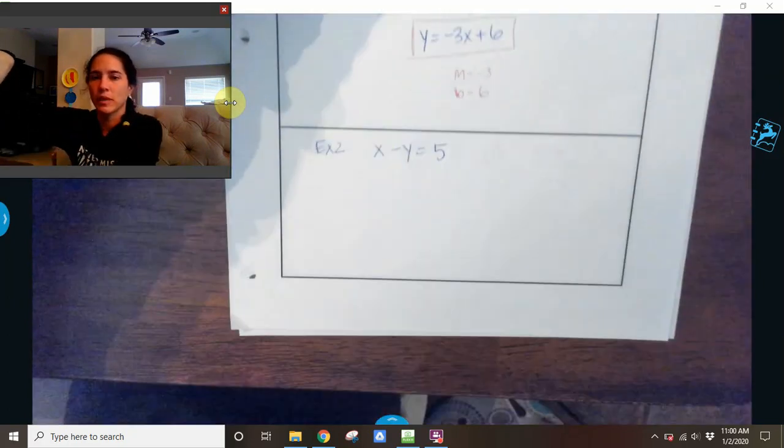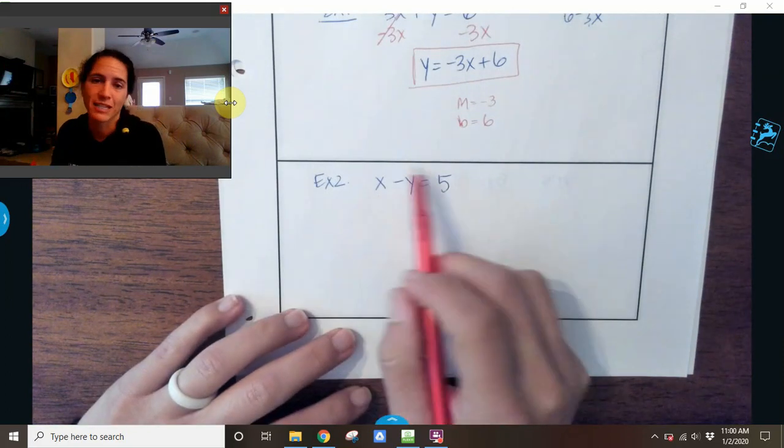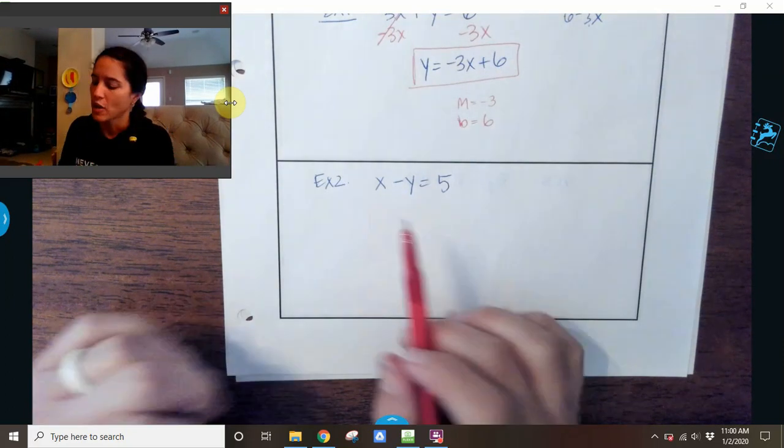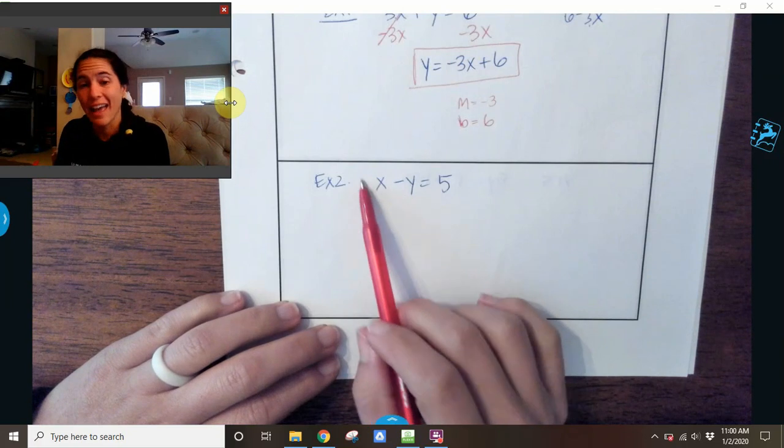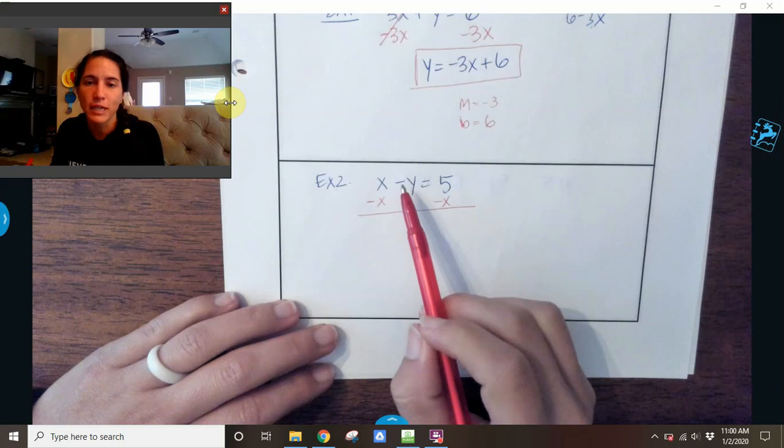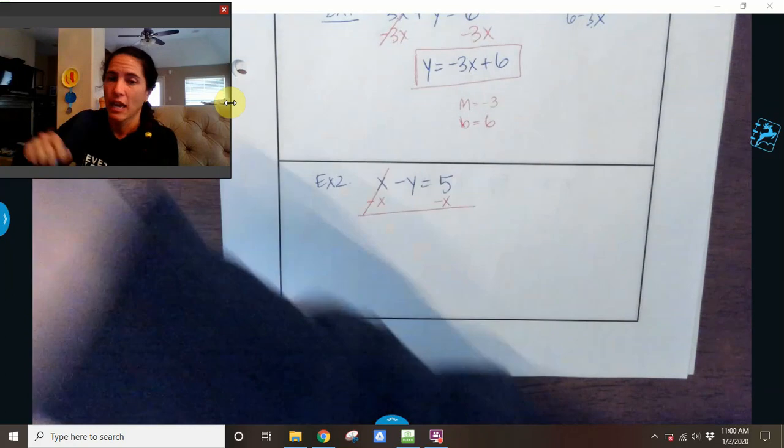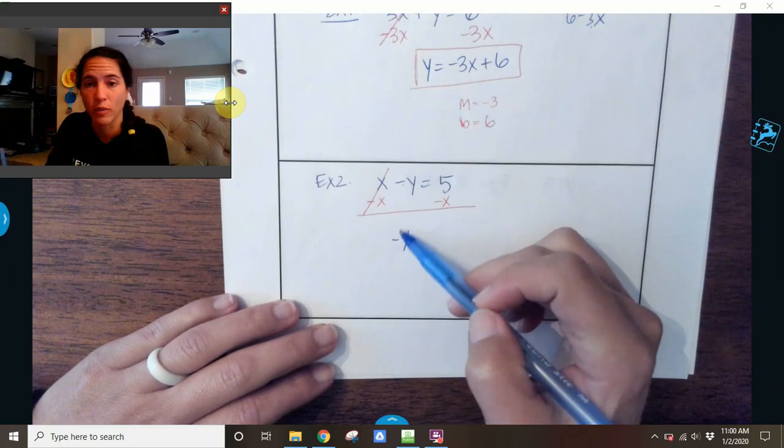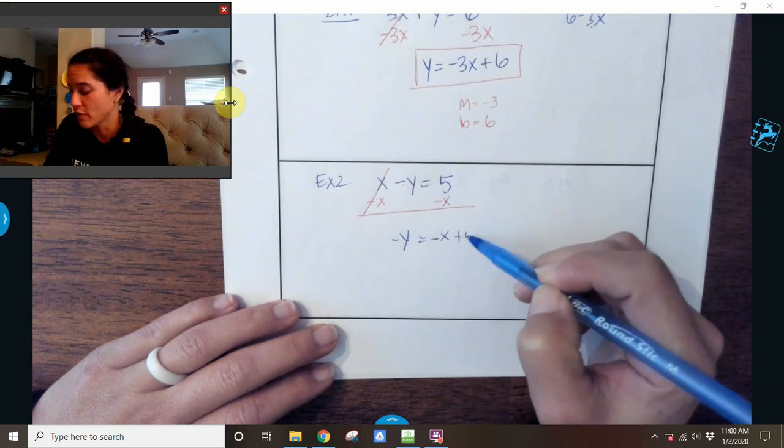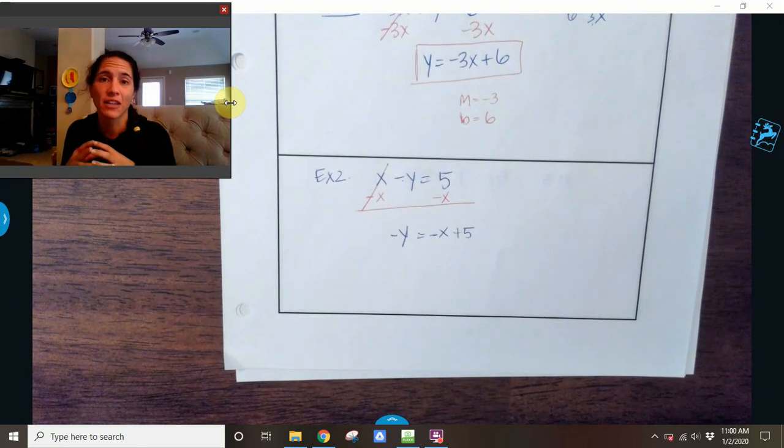Let's do another example. Example 2, X minus Y equals 5. Again, I'm going to follow my steps. I don't have any combining like terms. So my X is a positive X, so I'm going to subtract X from both sides. You might see this minus, but that is really a negative Y. The X is positive, so I'm going to subtract it, and then I'm left with negative Y. Be careful. Make sure you bring your negative down. Equals, I'm going to put my X term first plus 5 because the 5 is positive. So now I need to isolate my Y.